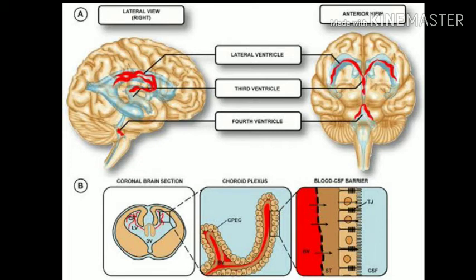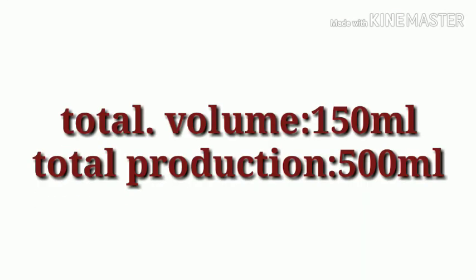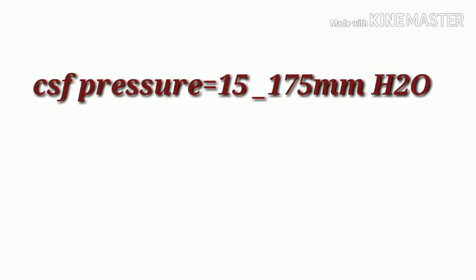Cerebrospinal fluid is produced by the choroid plexus in the brain and then reabsorbed into the bloodstream. The normal capacity for the nervous system cavities is 1600 to 1700 ml, out of which 150 ml is the cerebrospinal fluid volume present at any one time. Daily production is about 500 ml, meaning CSF is replenished approximately three times a day. The pH of cerebrospinal fluid is 7.3.